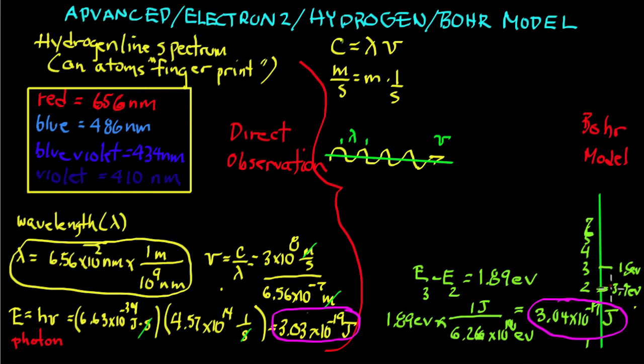When it drops back, the difference between these two energies in electron volts is 1.89 electron volts.